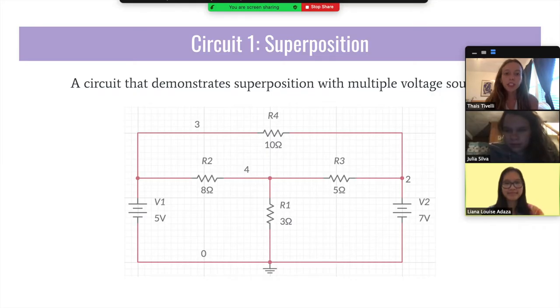So, the superposition theorem is the result of the superposition principle suited to the network analysis of electrical circuits. The superposition theorem states that for a linear system, the response in any branch of bilateral linear circuit having more than one independent source equals the algebraic sum of the responses caused by each independent source acting alone, where all the other independent sources are replaced by their internal impedances.